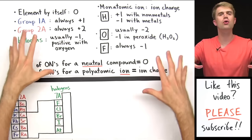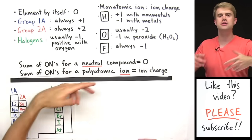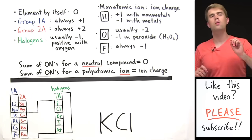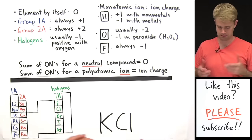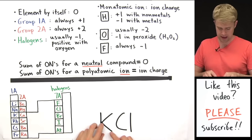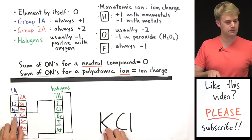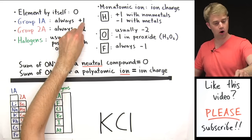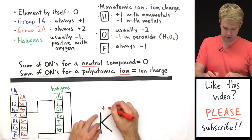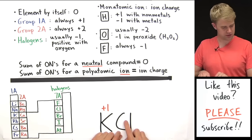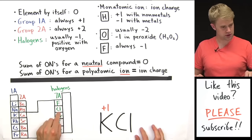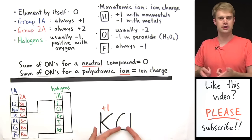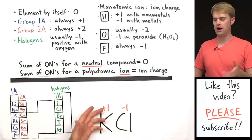For the rest of these rules, we usually use more than one together, so I'll talk about these as we use them in example problems. Here is our first example: KCl. We want to figure out the oxidation numbers of the elements in this compound. K, potassium, is in group 1A in the periodic table. The rule is that elements in group 1A are always plus one. So that is potassium's oxidation number. Then we have Cl — that is one of the halogens. Halogens are usually minus one, positive with oxygen. Cl isn't with oxygen here, so we give it a minus one oxidation number.